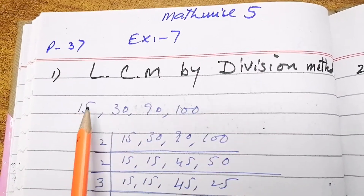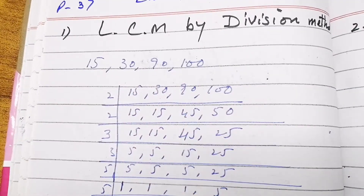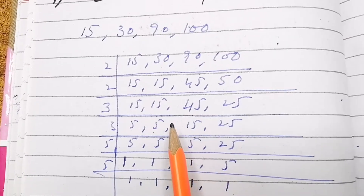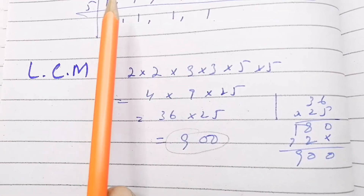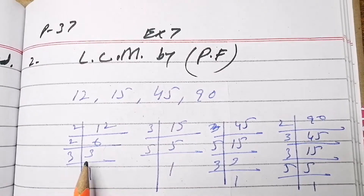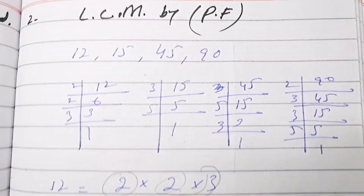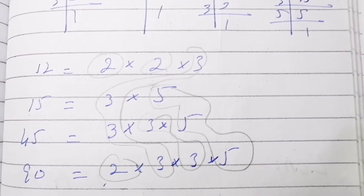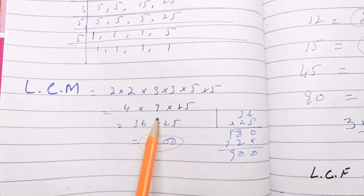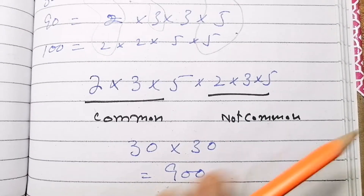Similarly, for LCM by division method, the same question number 1 is solved. The answer is again 900. You can match the answers: when you find LCM by prime factorization method and get 900, and then solve the same question by division method, if the answer is not the same, then there is something wrong in the calculations.